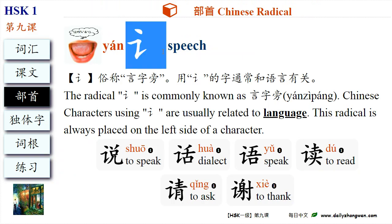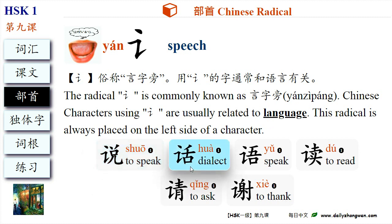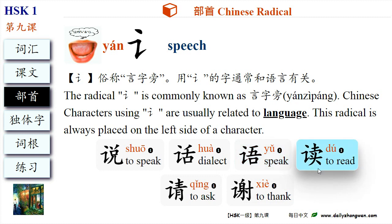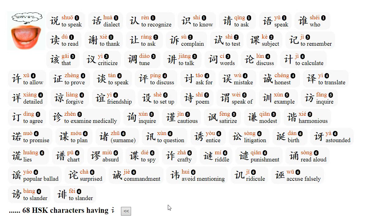The radical 言 is commonly known as 言字旁. Chinese characters using the radical 言 are usually related to language. For example: 说, 话, 语, 读, 询, 请. There are 68 HSK characters having the radical 言.